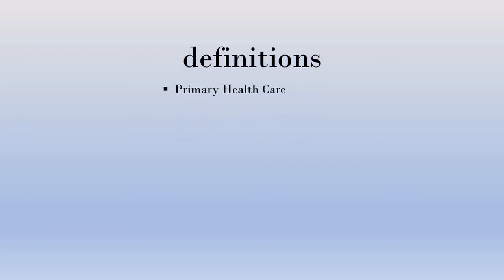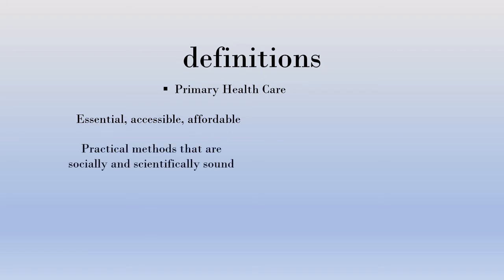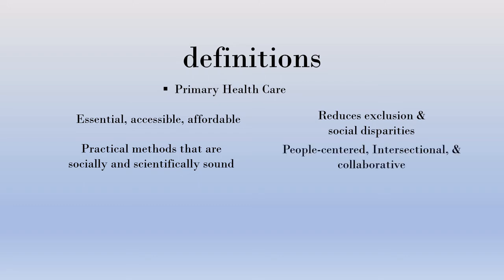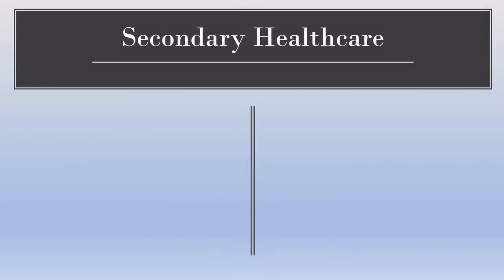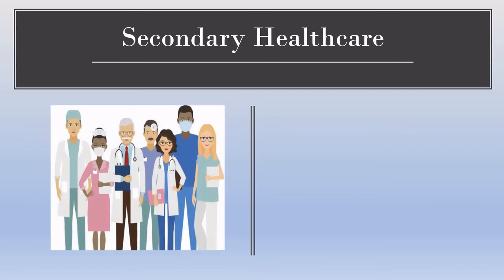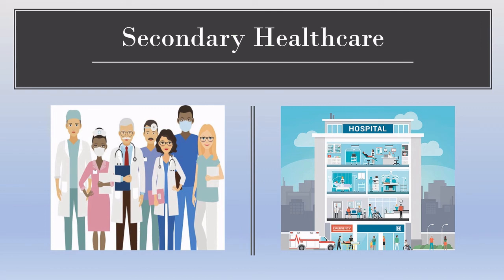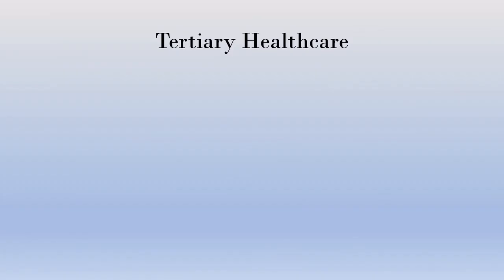Let's take a look at some important definitions. Primary health care: essential health care made accessible at a cost that a country and community can afford, with methods that are practical, scientifically sound, and socially acceptable. This approach is organized to reduce exclusion and social disparities in health; it is people-centered, intersectoral, collaborative, and promotes the participation of all stakeholders. Secondary health care: specialist care typically rendered in a hospital setting following a referral from a primary or community health care facility. Tertiary health care: specialist care rendered at central hospitals.